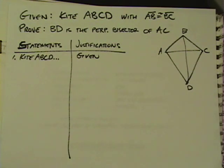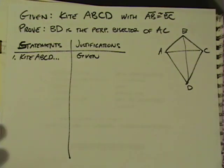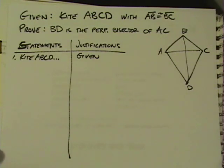Now we've come to a sample proof, and I just think it's really valuable to see how these proofs are done. This is very typical, and it's similar in many ways in the ideas it has to the ones that are in the book, especially the one in 3-1 about parallelograms and opposite sides.